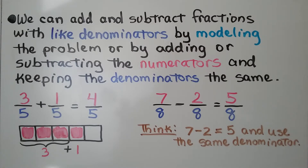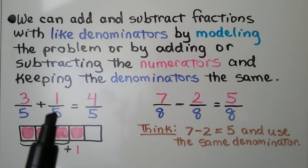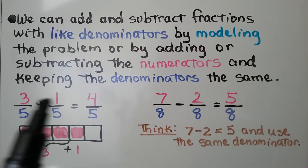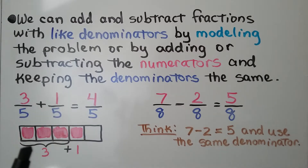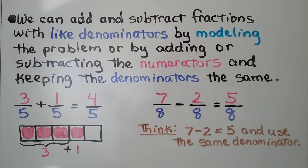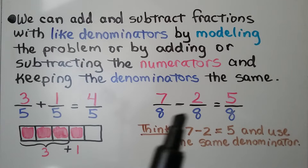We can add and subtract fractions with like denominators by adding or subtracting the numerators and keeping the denominators the same. We have three-fifths plus one-fifth: we keep the denominator five and just add the numerators — three plus one is four. We have three one-fifth parts and one more, giving us four one-fifth parts, which is four-fifths.